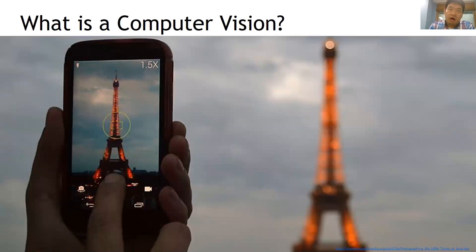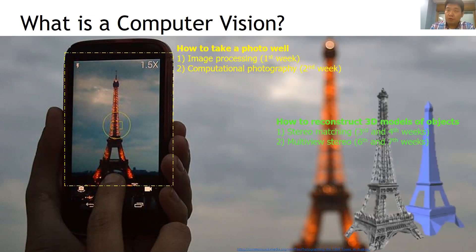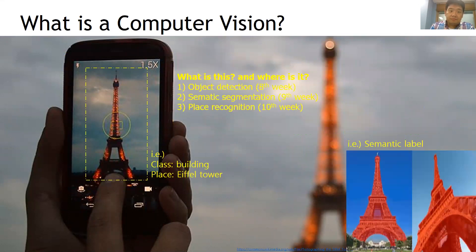I think computer vision is about all of the things around taking a photo. When we take a photo with our smartphone, our smartphone will suggest the best focus setting and make it beautiful with several post-processing steps. With the taken images, we can reconstruct 3D information of the scene for applications in gaming and photographic editing. If you upload your picture to the Google Photos application, Google will automatically tag the object classes and places in your photo.